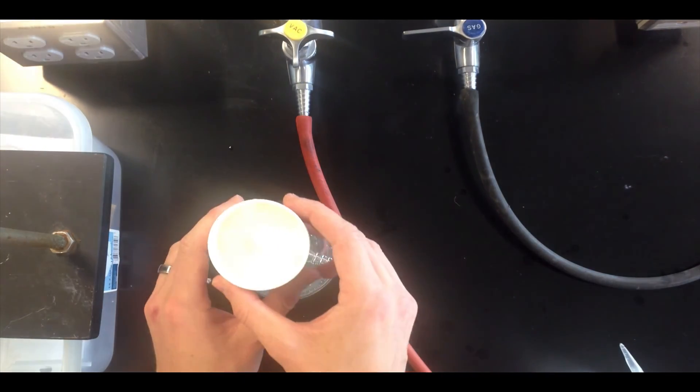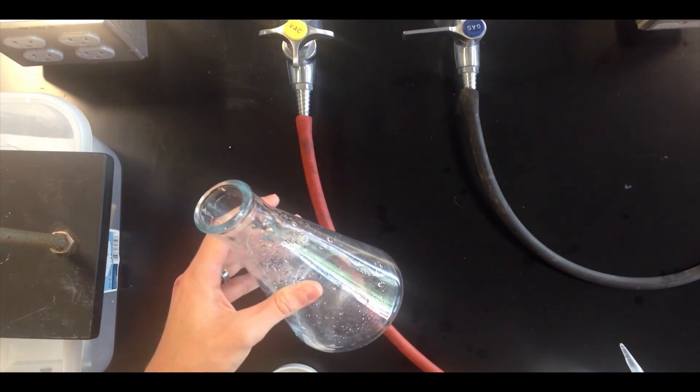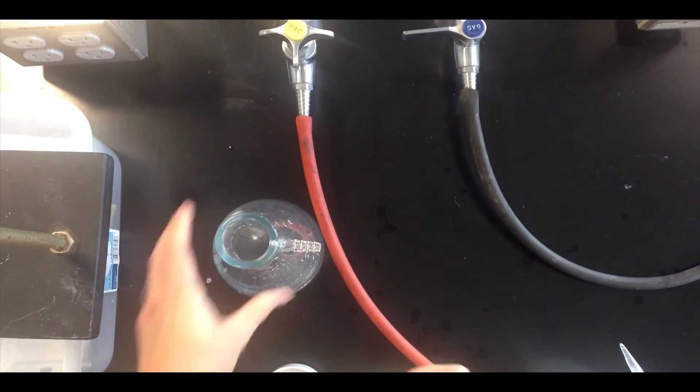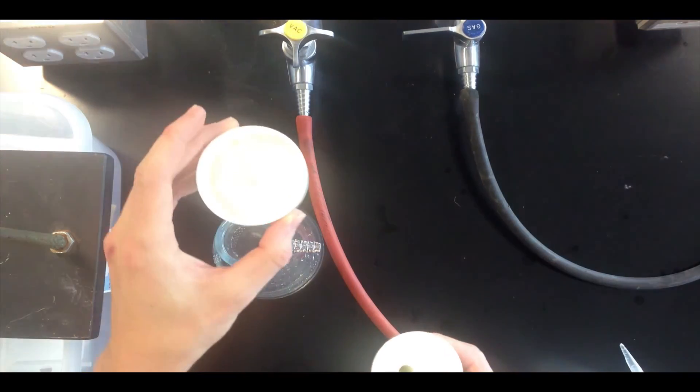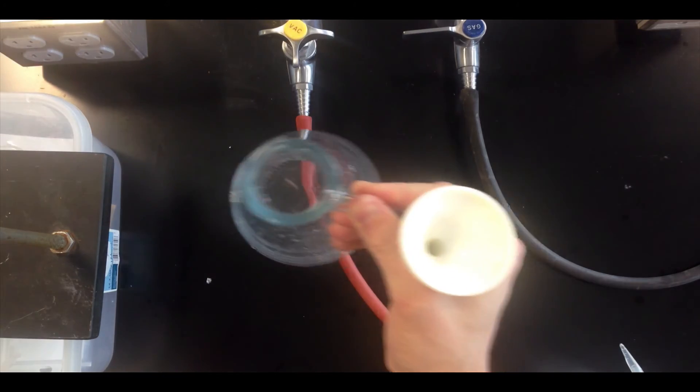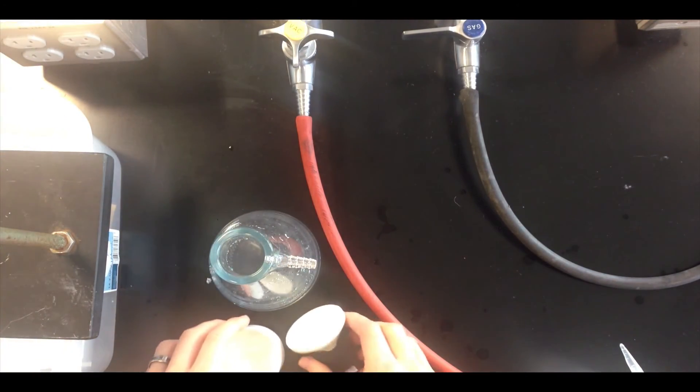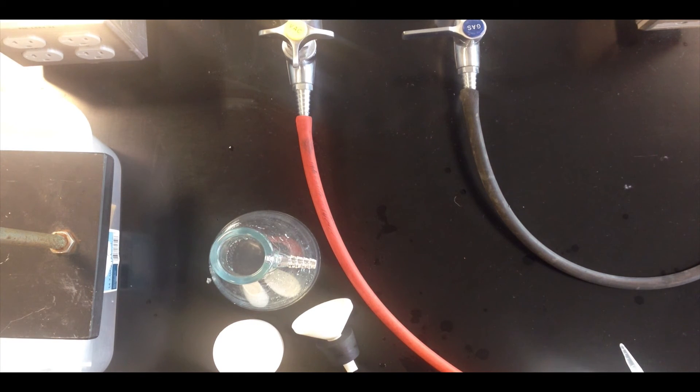If you need the filtrate, you can discard the solid, remove the stopper, and pour off the filtrate. If you need both, then you can put the solid in one beaker and put the filtrate from the filter flask in another beaker. There's a lot of flexibility to this method as far as getting out of it what you want or need.